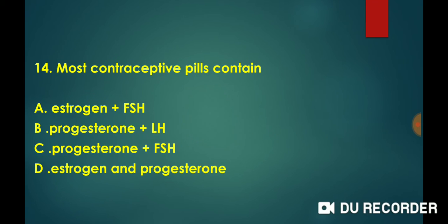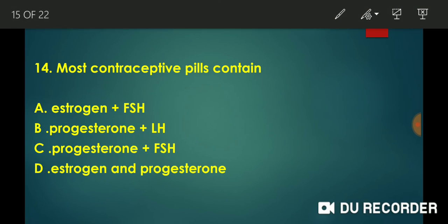Contraceptive pills contain what? Contraceptive pills contain both estrogen and progesterone. The answer to this question is option D.